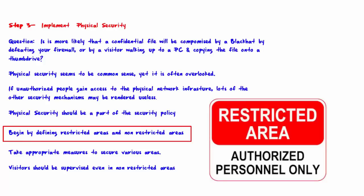Begin by defining restricted areas and non-restricted areas. Obviously, a server room should be a restricted area. Network equipment such as routers, firewalls, patch panels, and cabling should be in a restricted area. Backup media or any equipment containing data should also be stored in a restricted area.